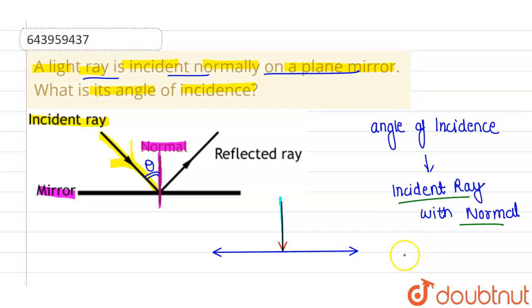So the angle of incidence is also 0 in this particular case. So angle of incidence comes out to be 0 degree. So this is our final answer 0 degree. I hope you understood. Thank you.